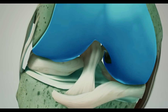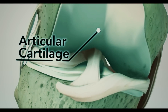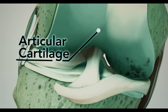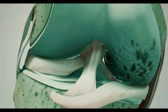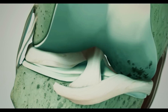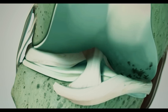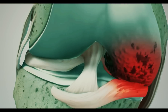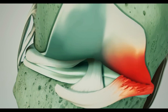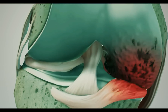Along with damage to the meniscus, articular cartilage can wear away over time, causing a narrowing of the joint space. When this shock absorption is lost and as the joint space narrows, bone can rub against bone, causing pain.